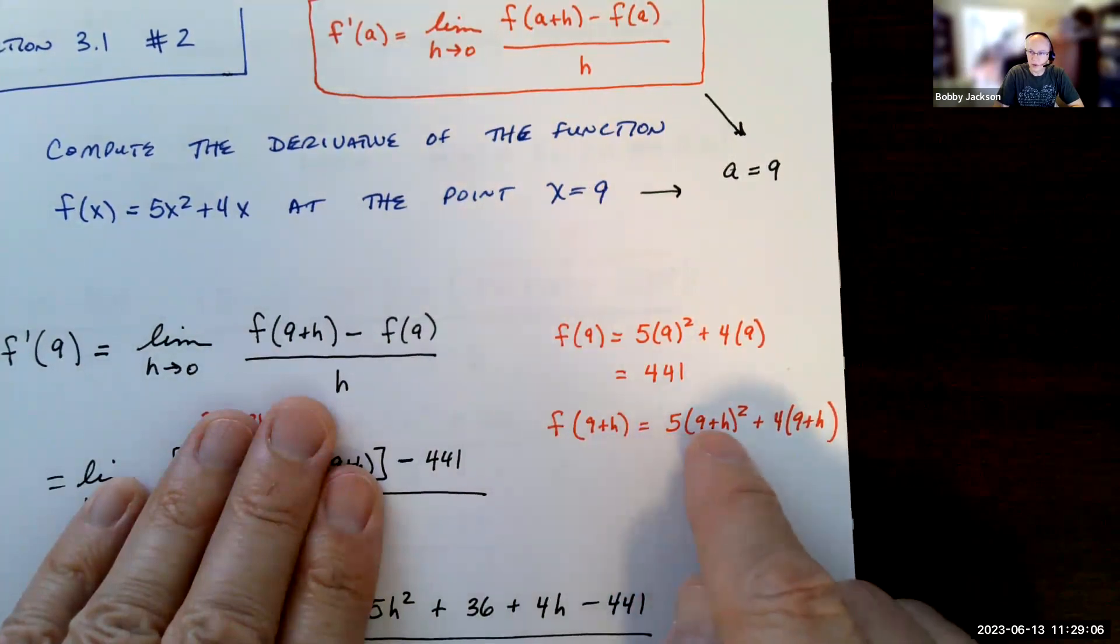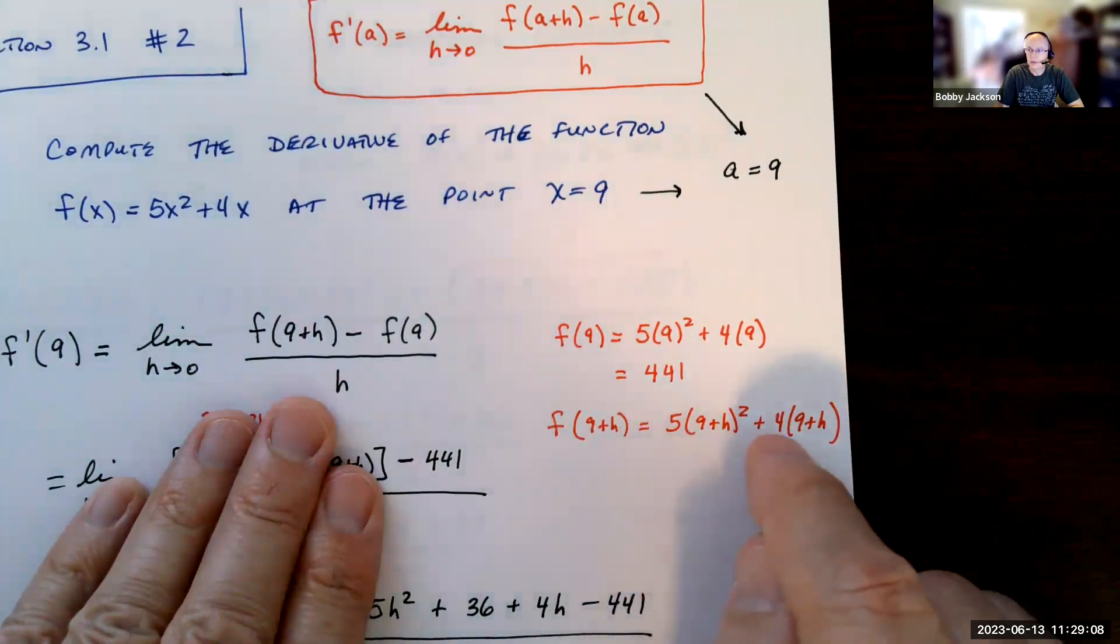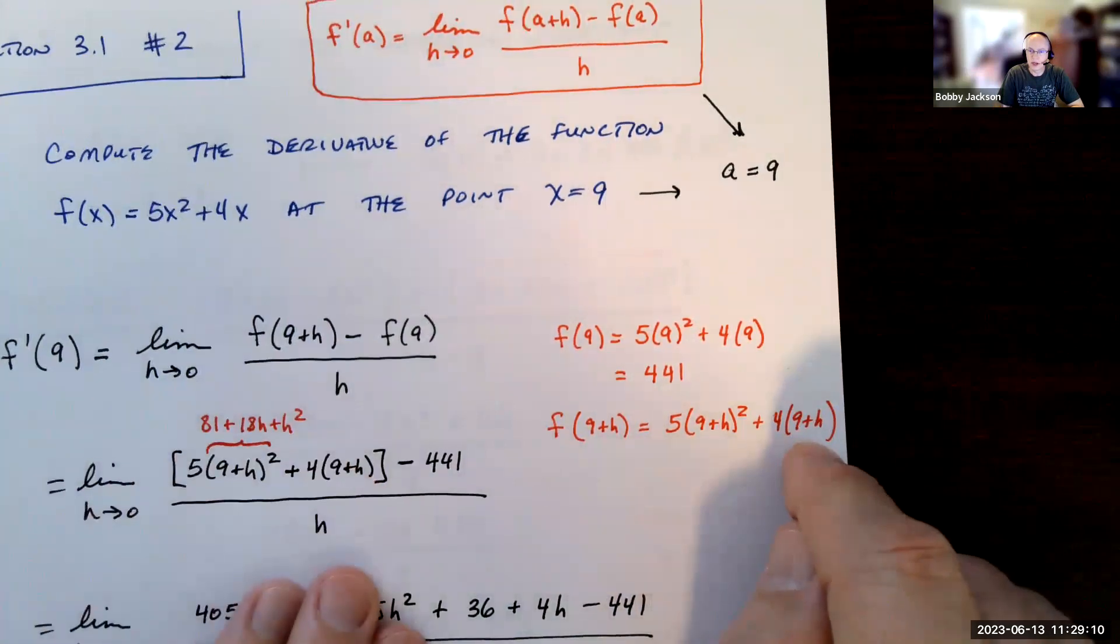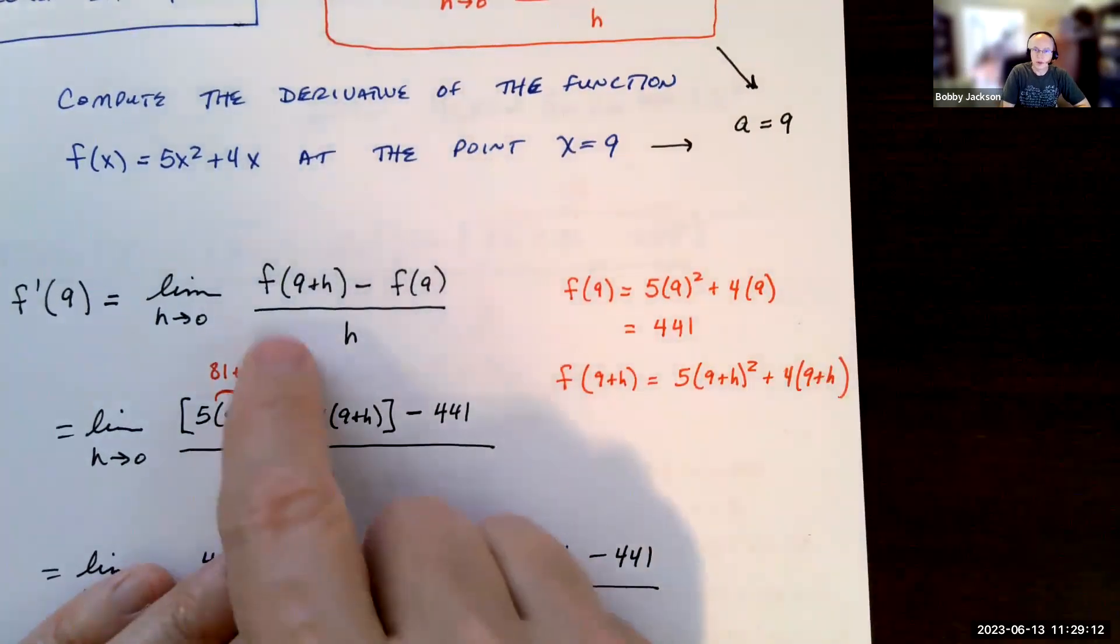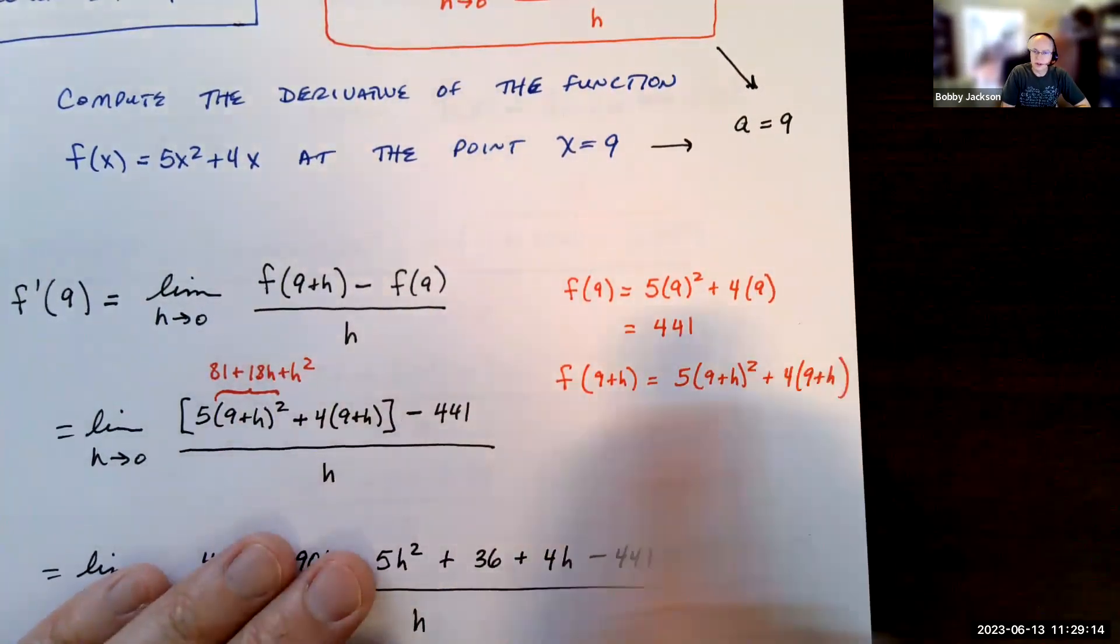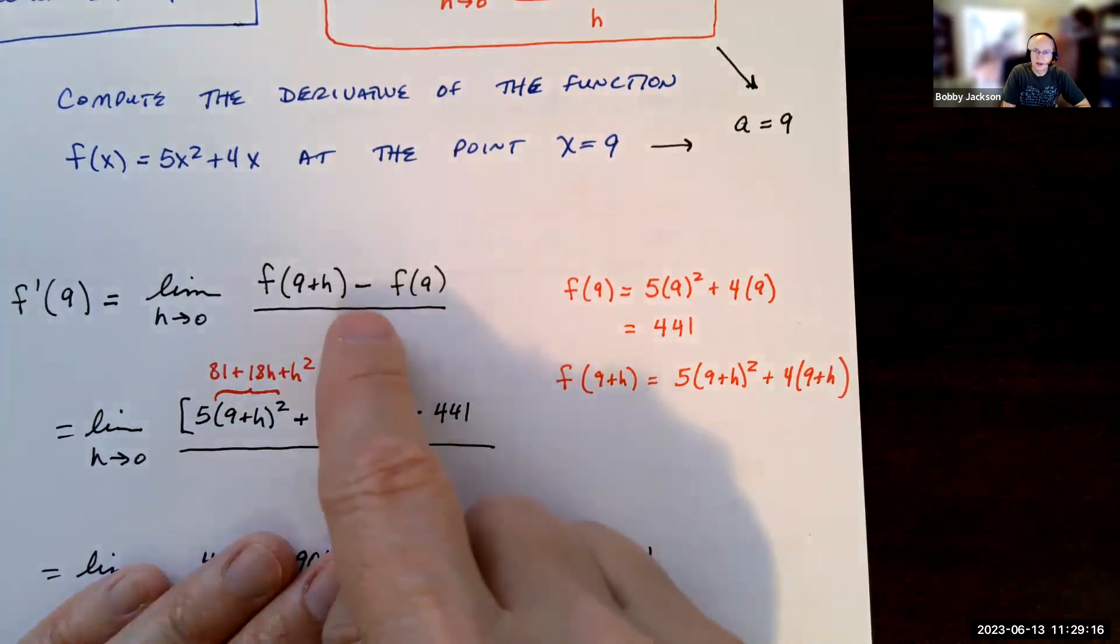What about f(9+h)? Well, wherever I see an x, I'm going to replace it with 9+h. So be careful, this is 5 times the quantity (9+h)² plus 4 times the quantity (9+h).